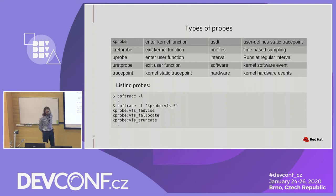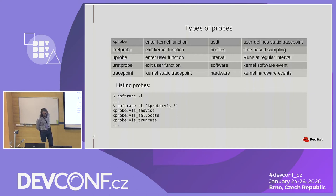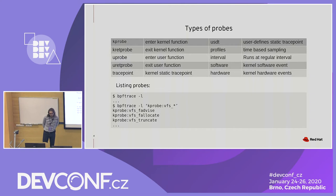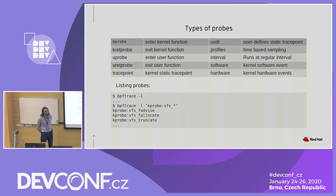Also, there are tracepoints. Tracepoints are a number of static tracepoints that have been inserted in strategic places in the kernel. They also typically have arguments and return values that you can read. And there are a few other types of probes and profiles that allow time-based sampling. Just so you know, there are other kinds of probes that exist. Something pretty useful: you can list your probes because there are really plenty of them. You can search by probe name and you can also use a wildcard.